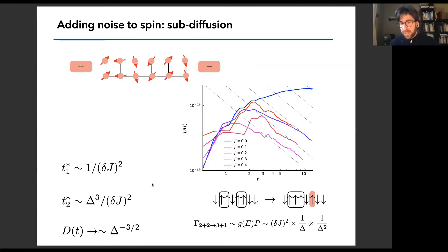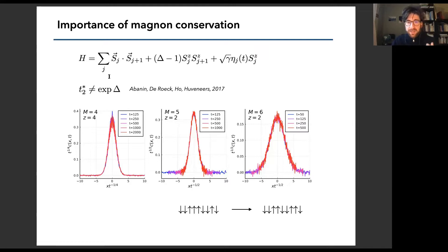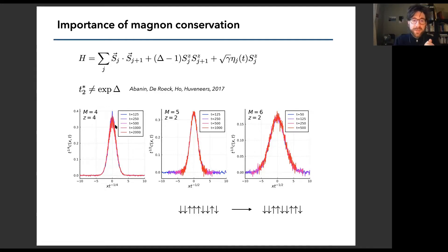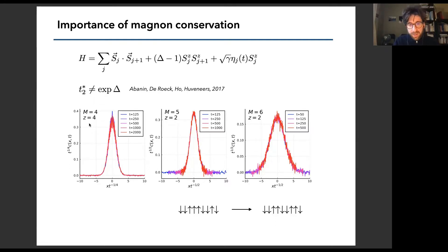We checked that magnon conservation is important, not just domain wall conservation. If only domain wall conservation were at play, the extra timescale would be exponential in Delta. We verify this by creating another random gate model where instead of conserving domain walls on two sites, you allow processes that still conserve the number of domain walls but do not conserve magnons. There you become diffusive immediately. The only sub-diffusive model is the X-NOR model, which indeed conserves both domain wall and magnon numbers.